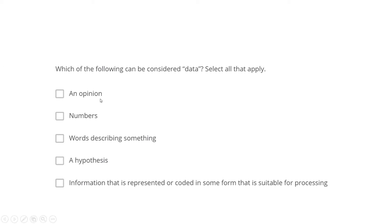Data can obviously be a number. Data can be a word describing something - like when we write a review about an Amazon product, we are showing our sentiment and satisfaction level using comments, so those are data. A hypothesis is not data - hypothesis relates to inference about population from sample, so it is not related to the data definition. Information represented or coded in some form suitable for processing - yes, that can also be data.